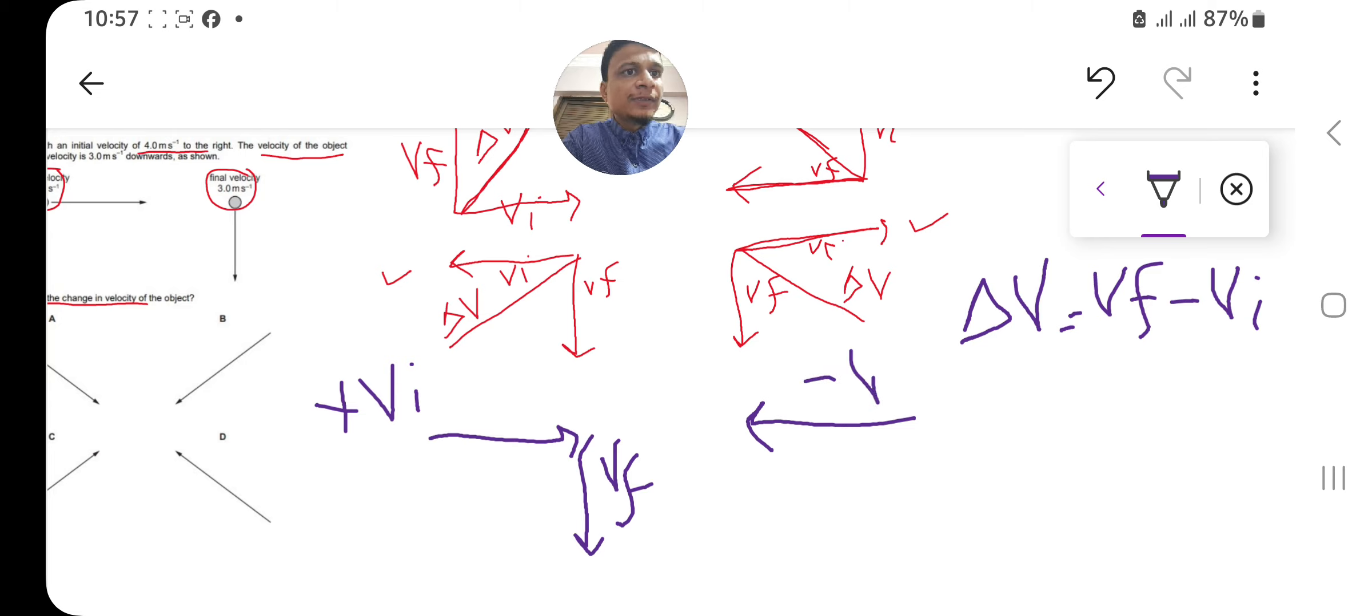So right now this matches the case of this one. This matches the case of this one. And you know that whenever Vi is on the left and Vf is downward, we have delta V, change in velocity, like this in this direction.